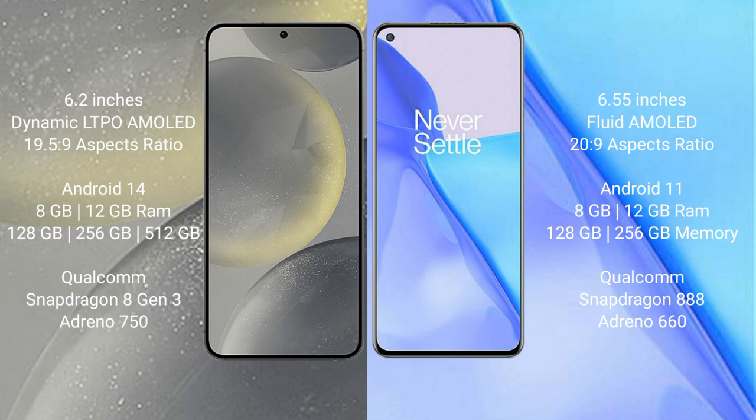Samsung Galaxy S24 runs on the Android 14 operating system. OnePlus 9 runs on the Android 11 operating system.